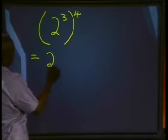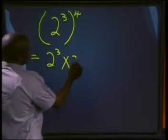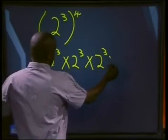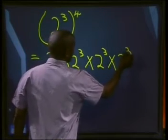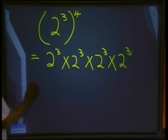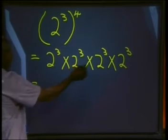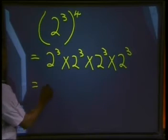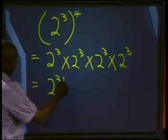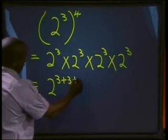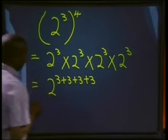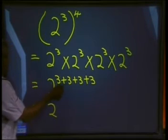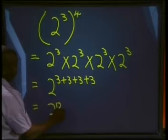This means we have 2 to the power of 3, multiplied by 2 to the power of 3, multiplied by 2 to the power of 3, multiplied by 2 to the power of 3 — four times. Applying our first law: if we are multiplying and the bases are the same, we add the exponents. Therefore we'll have 2 to the power of 3 plus 3 plus 3 plus 3, four times. Adding that gives us 2 to the power of 12.